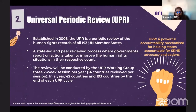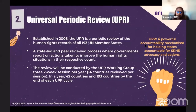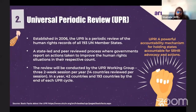What is the UPR? The UPR is a periodic review of the human rights records of all 193 UN member states. The UPR was established in 2006, and it is a powerful accountability mechanism for holding states accountable, including for sexual and reproductive health and rights actions. It serves as a platform to bring international attention and pressure for governments to improve the human rights situation in their respective countries.